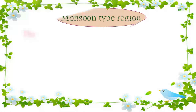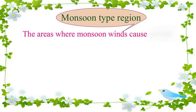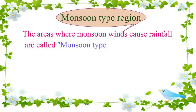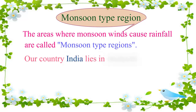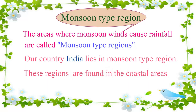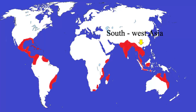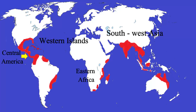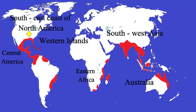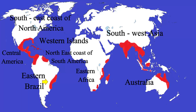The areas where monsoon winds cause rainfall are called monsoon-type regions. Our country India lies in the monsoon-type region. These regions are found in the coastal areas of South West Asia, Eastern Africa, Western Islands, Central America, Australia, South East Coast of North America, North East Coast of South America, and some areas of Eastern Brazil.